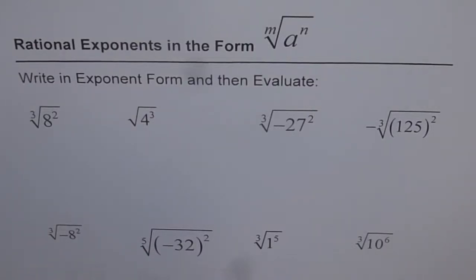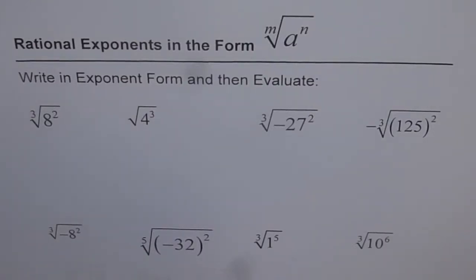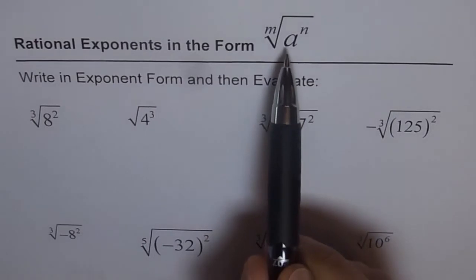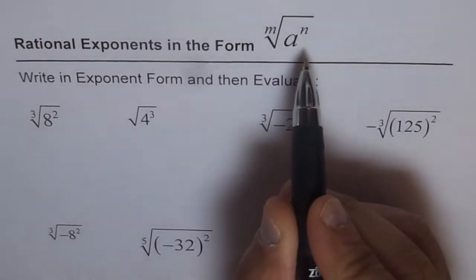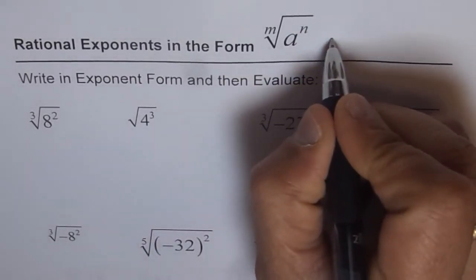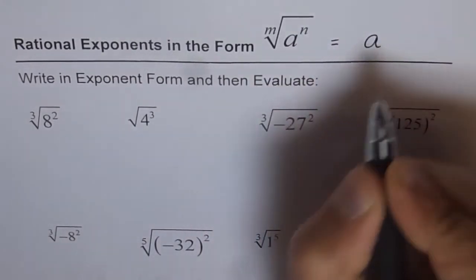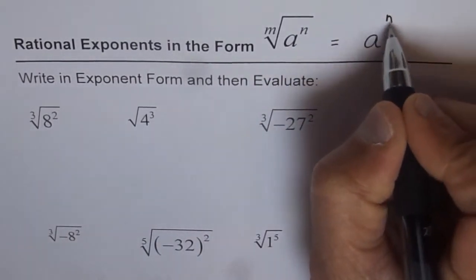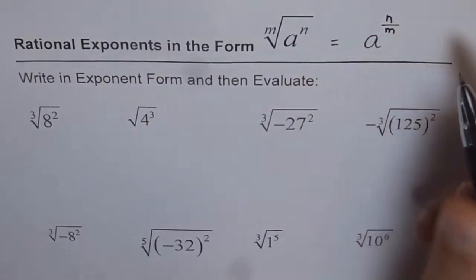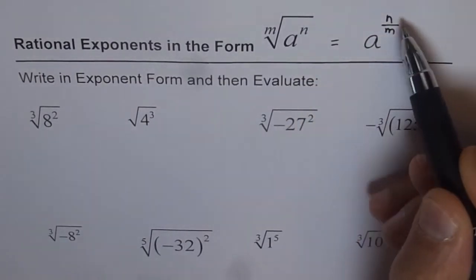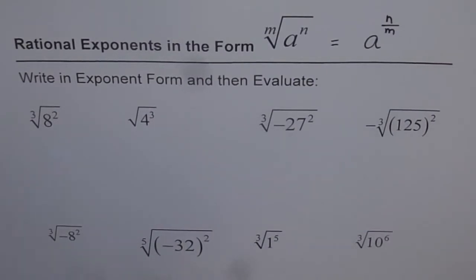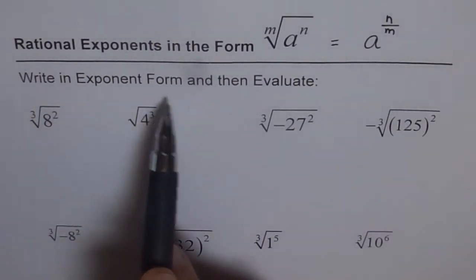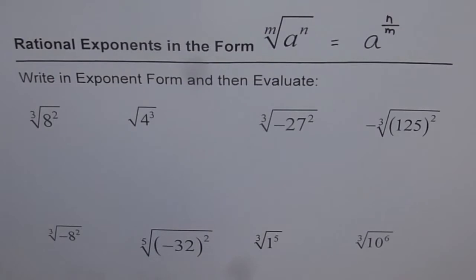Rational exponents in the radical form. Where a is to the power of n and it is the mth root, we can write this in exponent form as equal to a to the power of n over m. So that is the exponent n and this is the mth root. The question is: write in exponent form and then evaluate. So let's first write them all in exponent form.